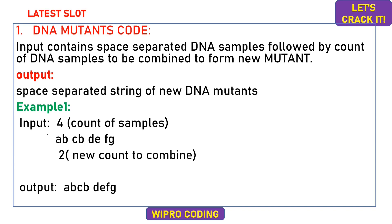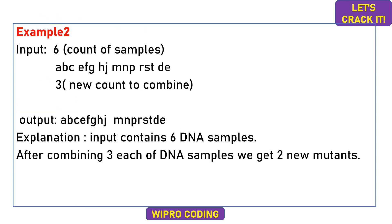Two DNA samples are combined: AB and CB form one new mutant, and DE and FG form another new mutant. So the output contains two DNA mutants formed from four samples. This gives you clarity on how the combining works.